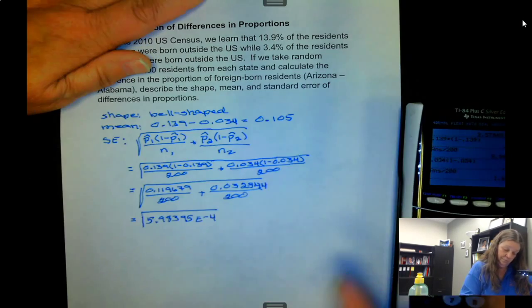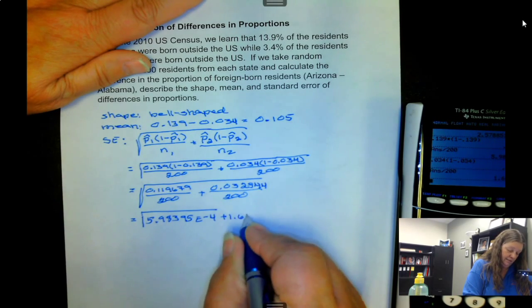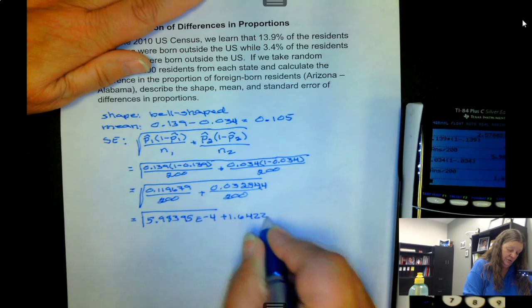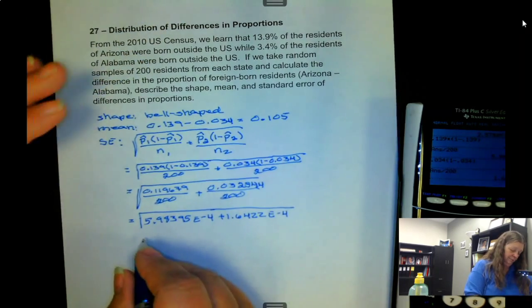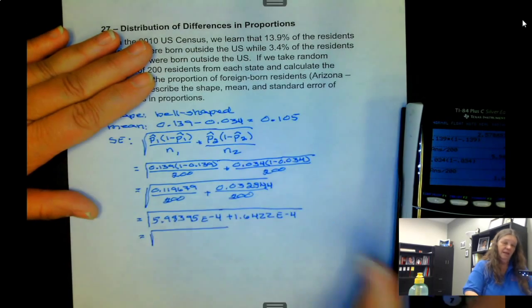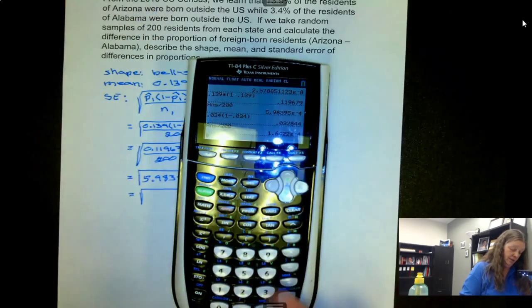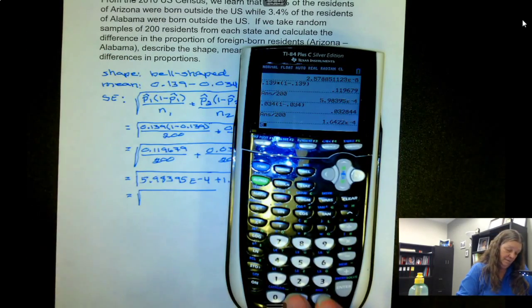To put those into your calculator you would do 5.98395 then second comma e-4 plus 1.6422.